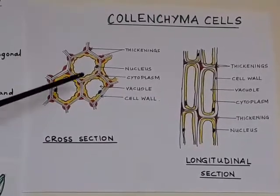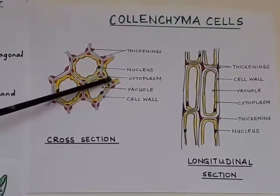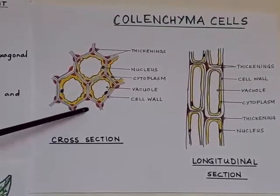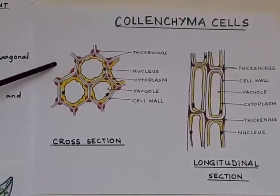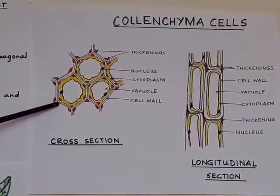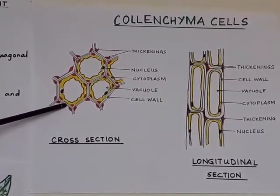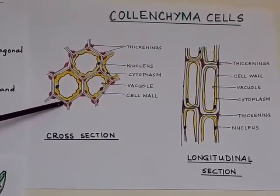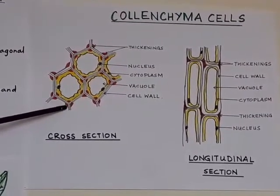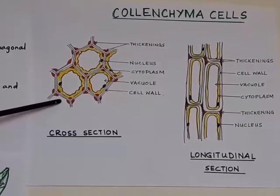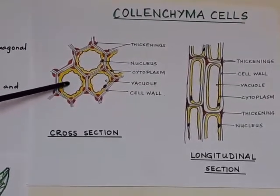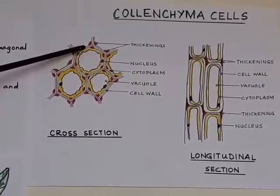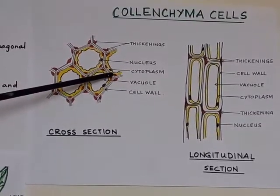You can see that the corners are having thickenings which are red in colour. These thickenings are due to the deposition mostly of pectin, and also at times cellulose and hemicellulose are also present. As the colenchyma cells are living, they will have cytoplasm in them, which is yellow in colour.